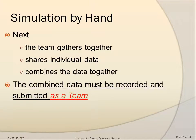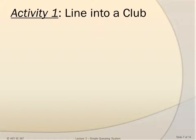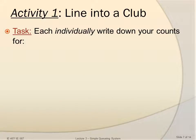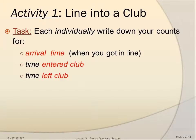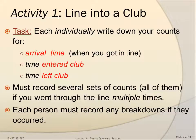The combined data must be recorded and submitted as a team. In Activity 1, line into a club, the task is for each person to individually write down your counts for arrival time — the time when you got in line — time entered club, and time left club. You must record several sets of counts, all of them, if you went through the line multiple times. Each person must record any breakdowns if they occurred.